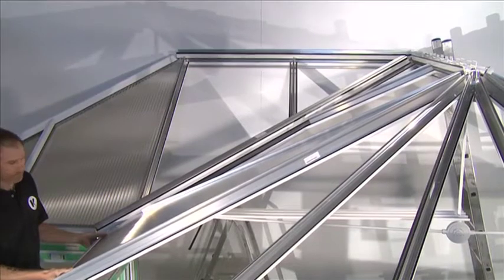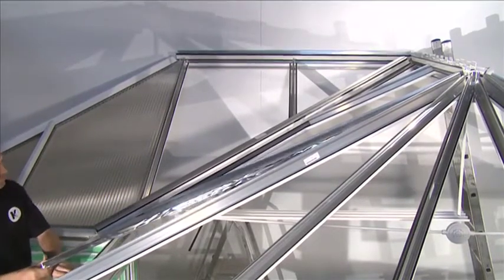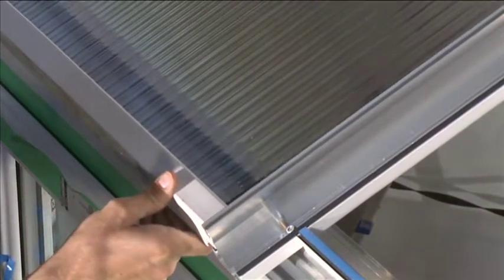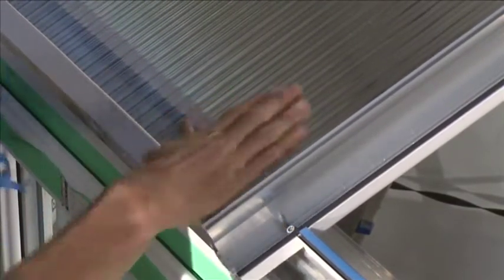Push the roof glazing sheet up into the universal ridge wings, then slowly allow it to slide back down away from the ridge until it rests flush with the bottom of the transom glazing bars.